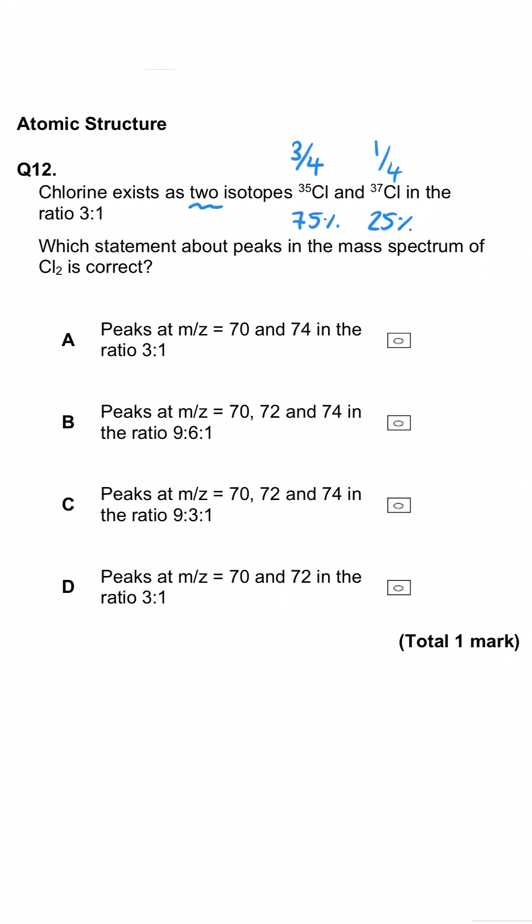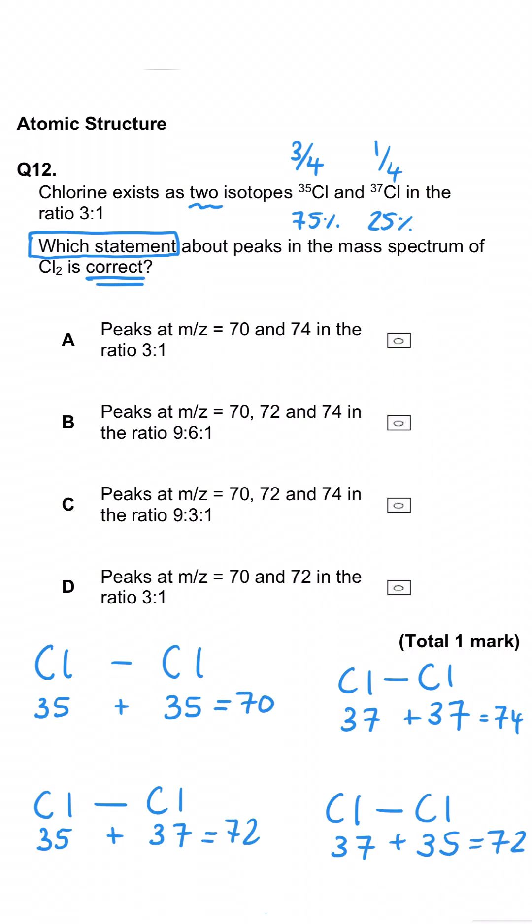We've been asked which statement is correct about the peaks in the mass spectrum for Cl2. So we're looking at the different combinations. We can have both chlorine-35, or both chlorine-37, or one 35 and one 37, or 37 and 35. When we total what each adds up to, we get 70 for the top, 74 for the next, and the bottom two both add up to 72.